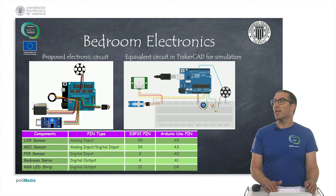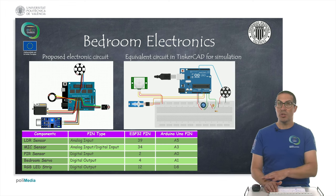So these are the electronics that we propose for the bedroom. It includes a light sensor, a mic sensor, a PIR sensor. In this presentation we are only going to use the mic sensor, and also the bedroom has a servo to open and close the window and an RGB LED strip that we are not going to use in this presentation.